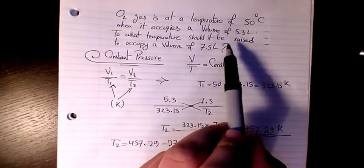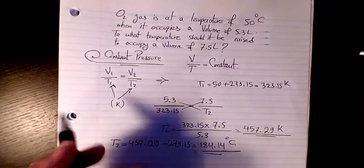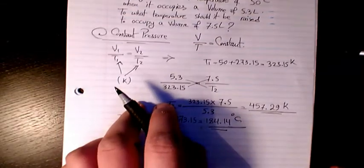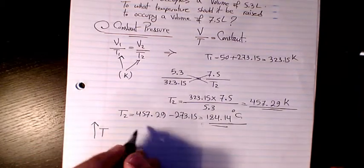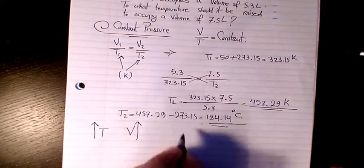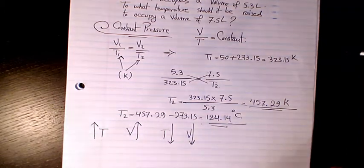the volume increased, so the temperature must be increased too. It's called Charles's Law. When the temperature is going up at constant pressure, volume is increasing too. Whenever the temperature is going down, volume is going down too.